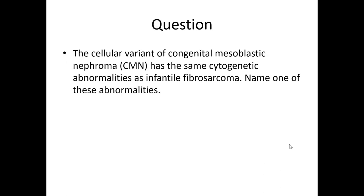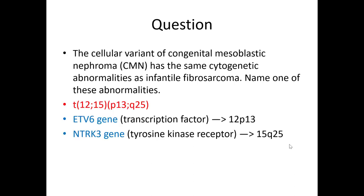The cellular variant of congenital mesoblastic nephroma has the same cytogenetic abnormalities as seen in infantile fibrosarcoma. The principal abnormality is a translocation between chromosomes 12 and 15, involving the ETV6 gene — a transcription factor on chromosome 12p13 — and the NTRK3 gene, a tyrosine kinase receptor on 15q25.